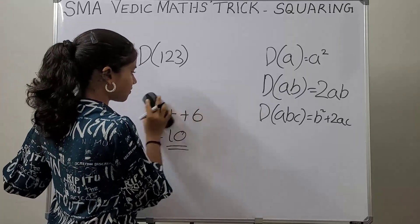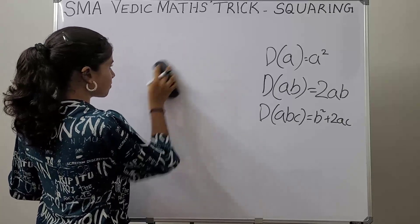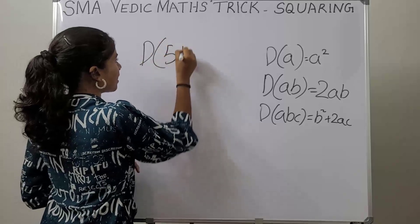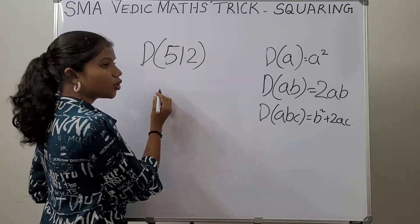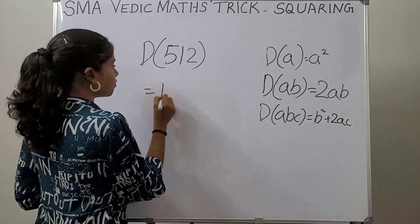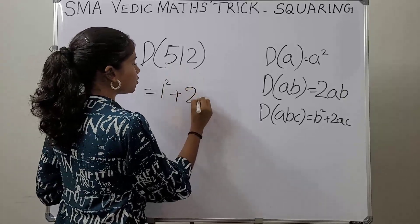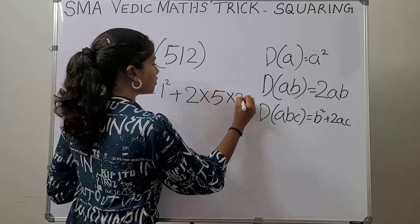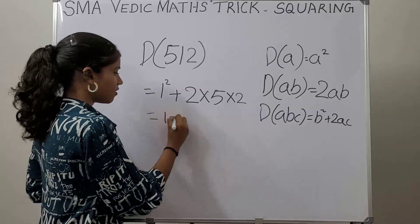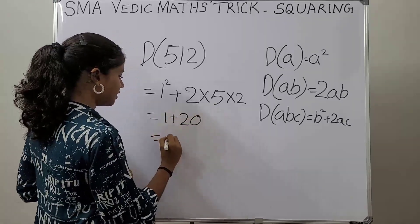Let's take one more example: duplex of 512. First we square the middle digit: 1², plus 2×5×2, which is 1 + 20. So the answer is 21.